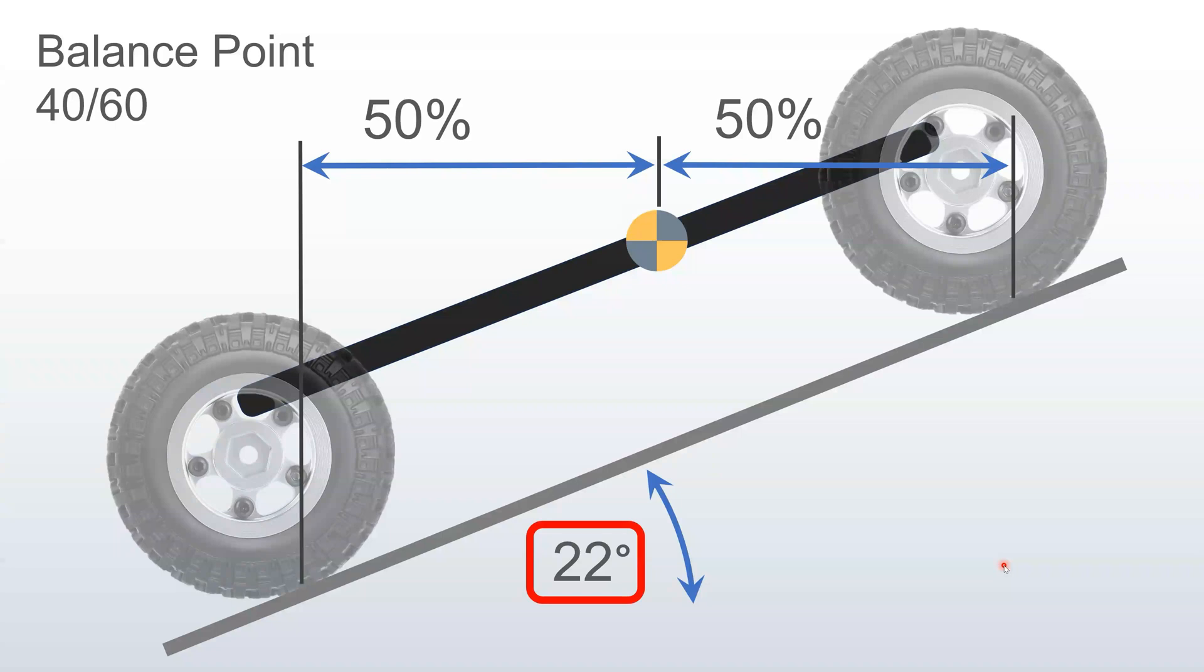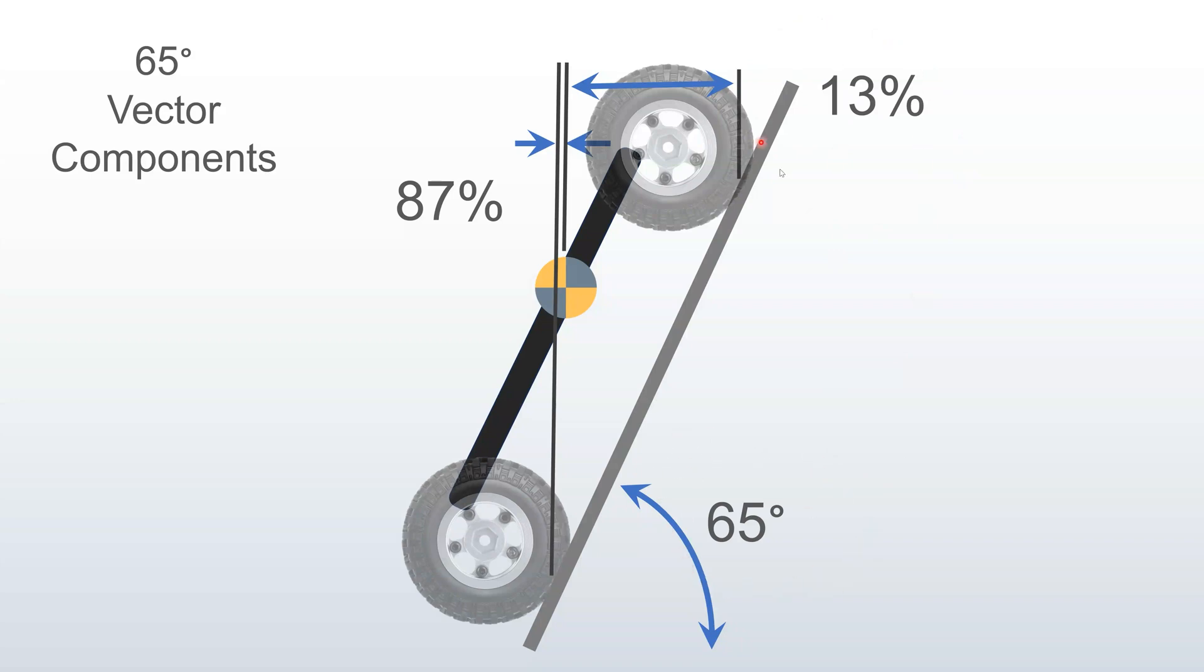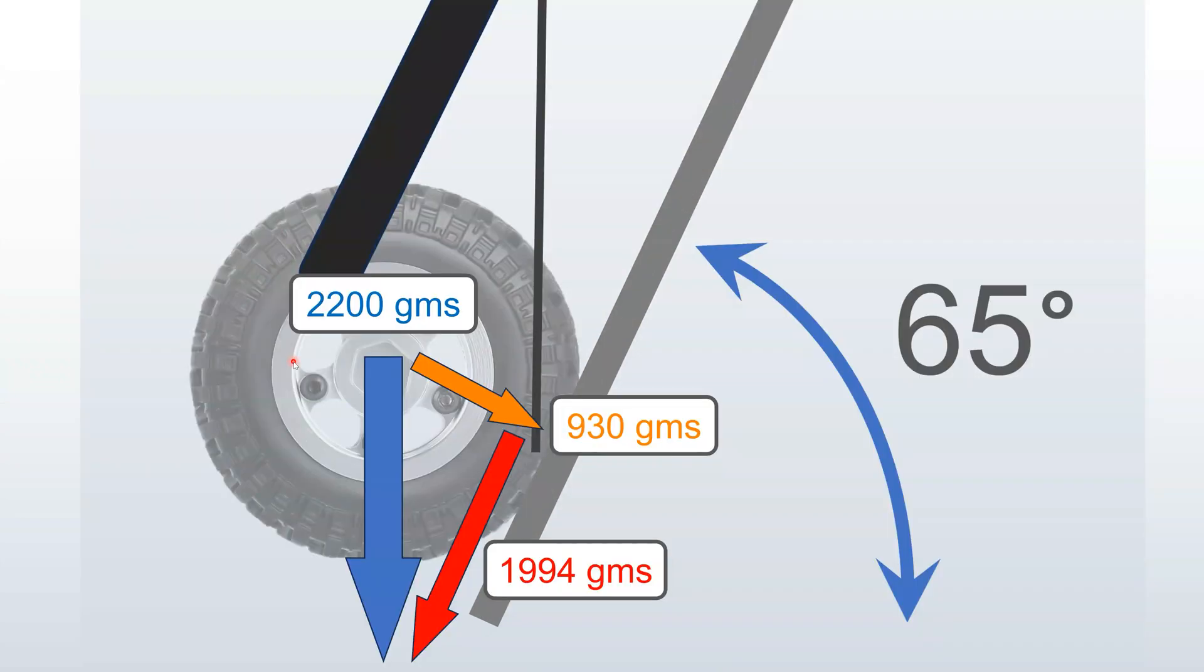Now let's look at what happens at 65 degrees. This is really steep. Now you've only got 13% of your weight on the front wheel and 87% of the weight pushing down on the rear wheel. But again, 87% of the weight is not the normal force that's pushing into the surface. It's something less than that. Let's take a closer look at the exact numbers. If you've got 2,200 grams pushing on the rear wheel, that's 87% of your total weight, 2,500 grams. When you do the vector components, you've only got 930 grams pushing against the surface. So this is the number you would use to calculate your frictional force. As you can see, your frictional force goes down real fast. And you've now got more force pushing the vehicle down the slope than you do pushing it into the slope, creating traction.